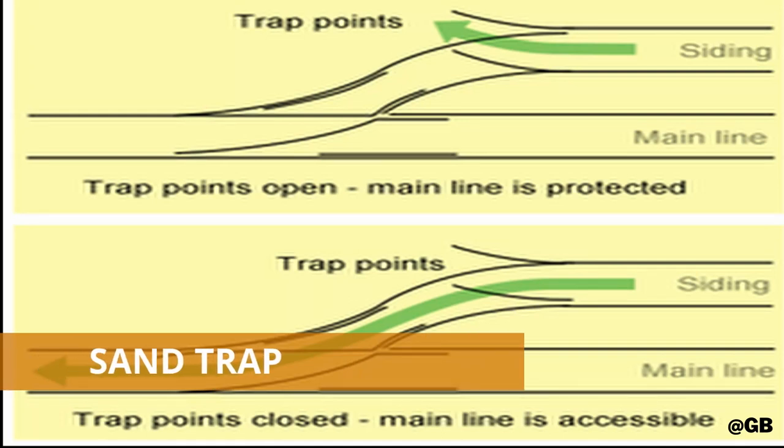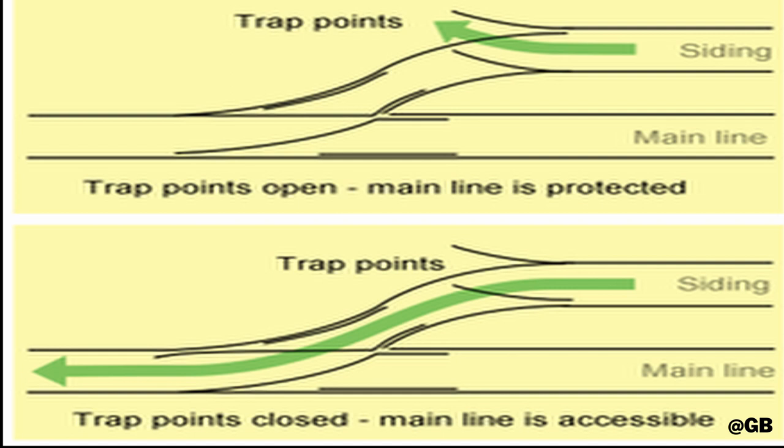Sand Trap or Sand Hump. Everyone who has traveled by train has seen a sand trap for sure, but many did not know its name or its use. A sand hump consists of a specified crossing section that covers the track at the end of a dead end siding, which is laid on a rising gradient. A moving vehicle comes to a stop because of the combined resistance of the sand hump and the rising gradient.